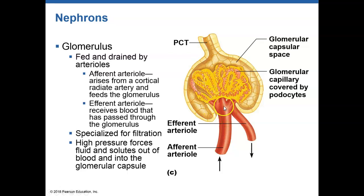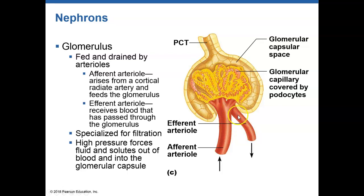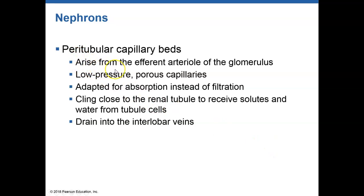As blood moves in, filtration — which is a passive process — occurs. Fluid fills into the Bowman's capsule and moves into the proximal convoluted tubule. Any fluid that doesn't move into the proximal convoluted tubule is brought back into the capillaries and leaves through the efferent arterioles. This is typically associated with differences in pressures, which we'll talk about a little later.